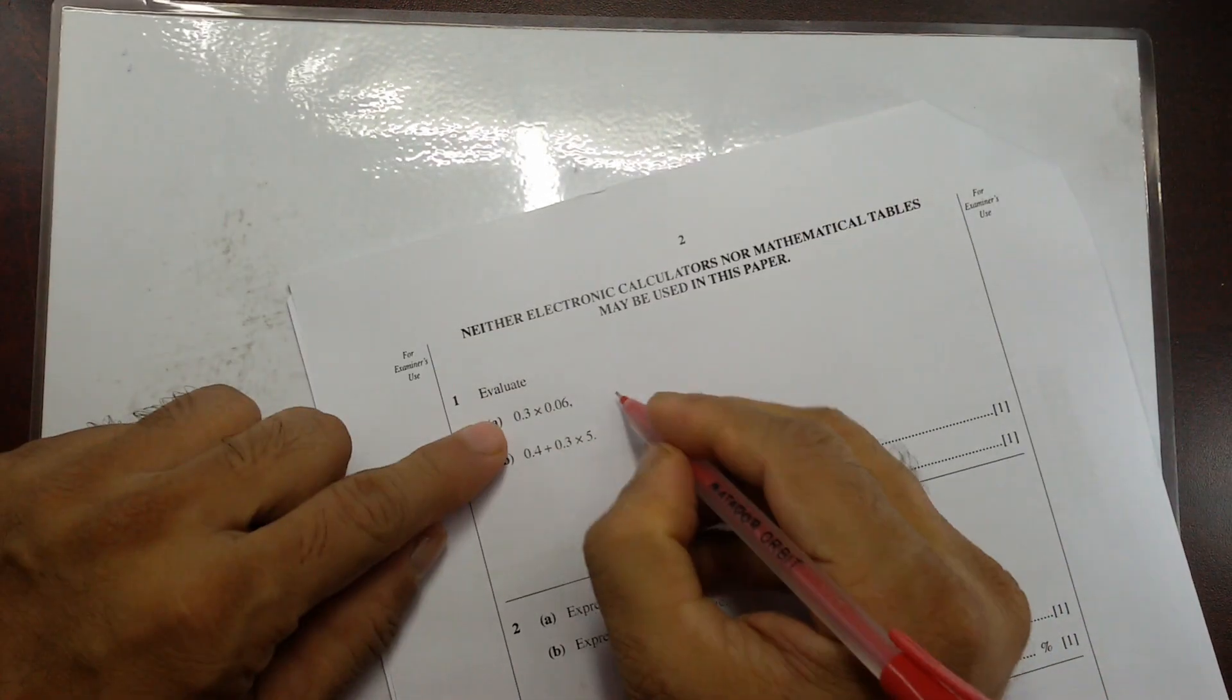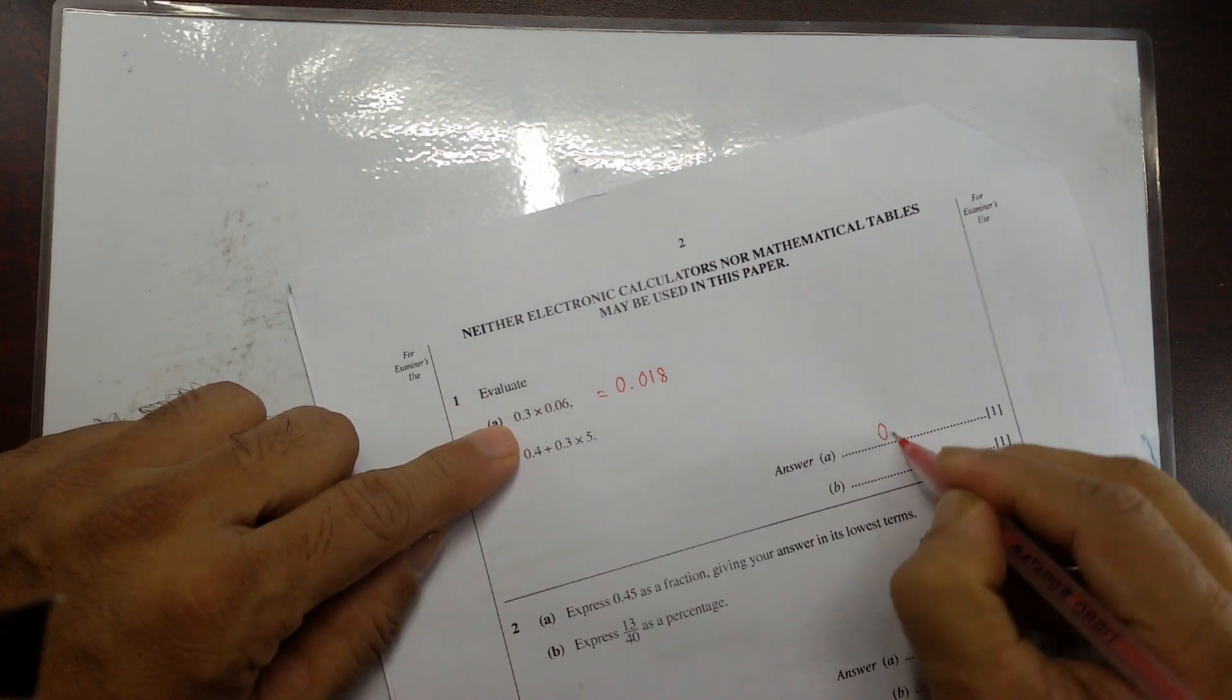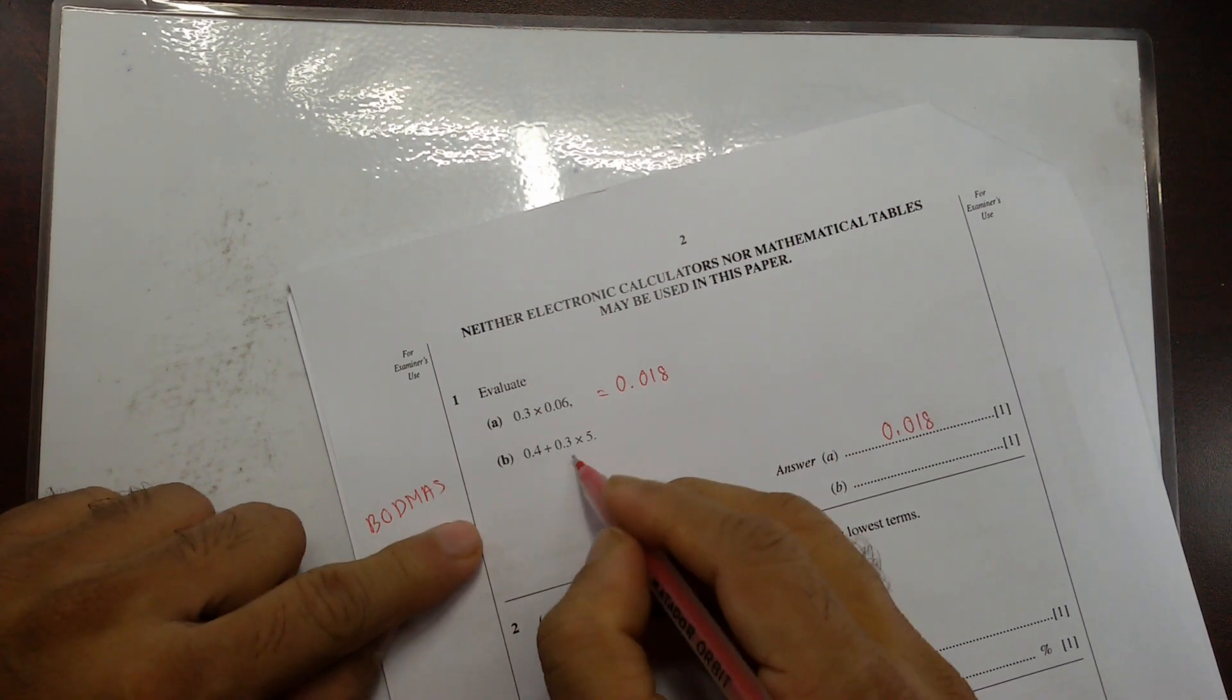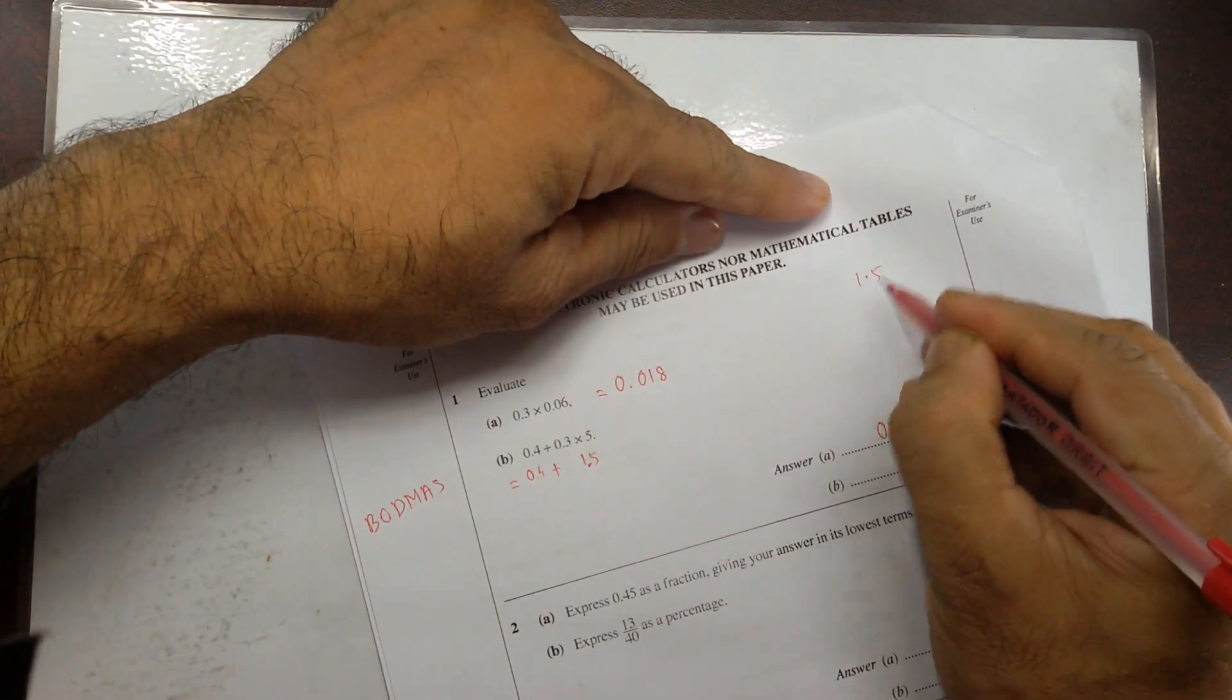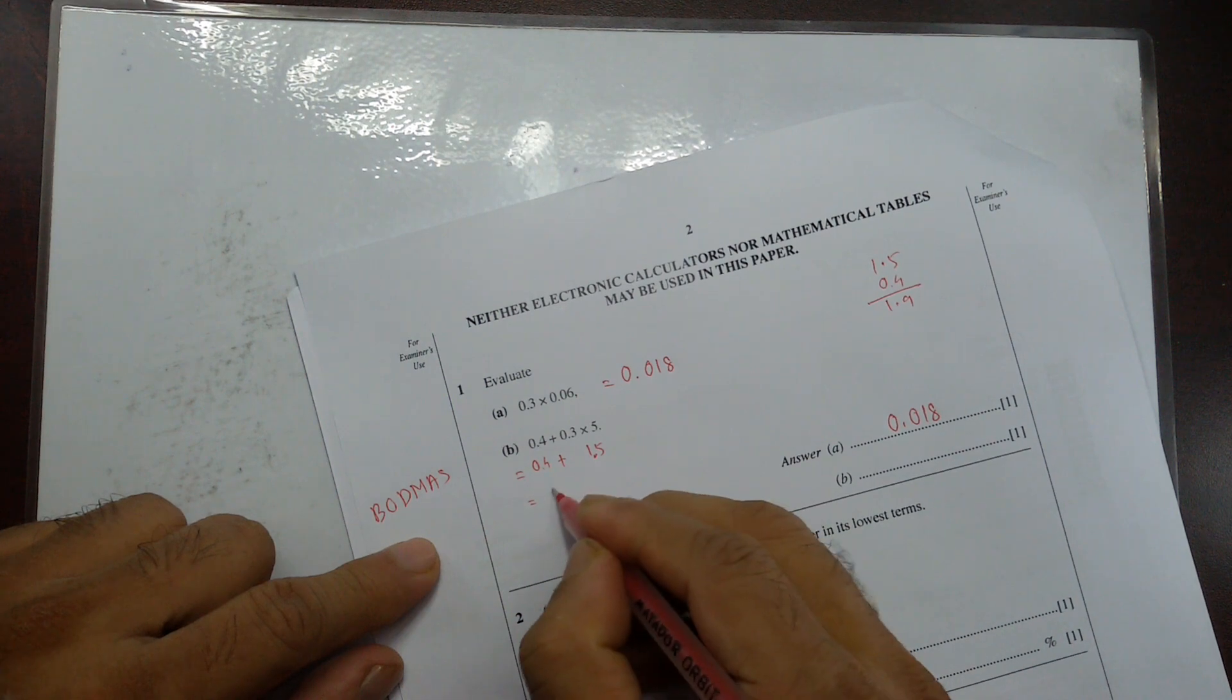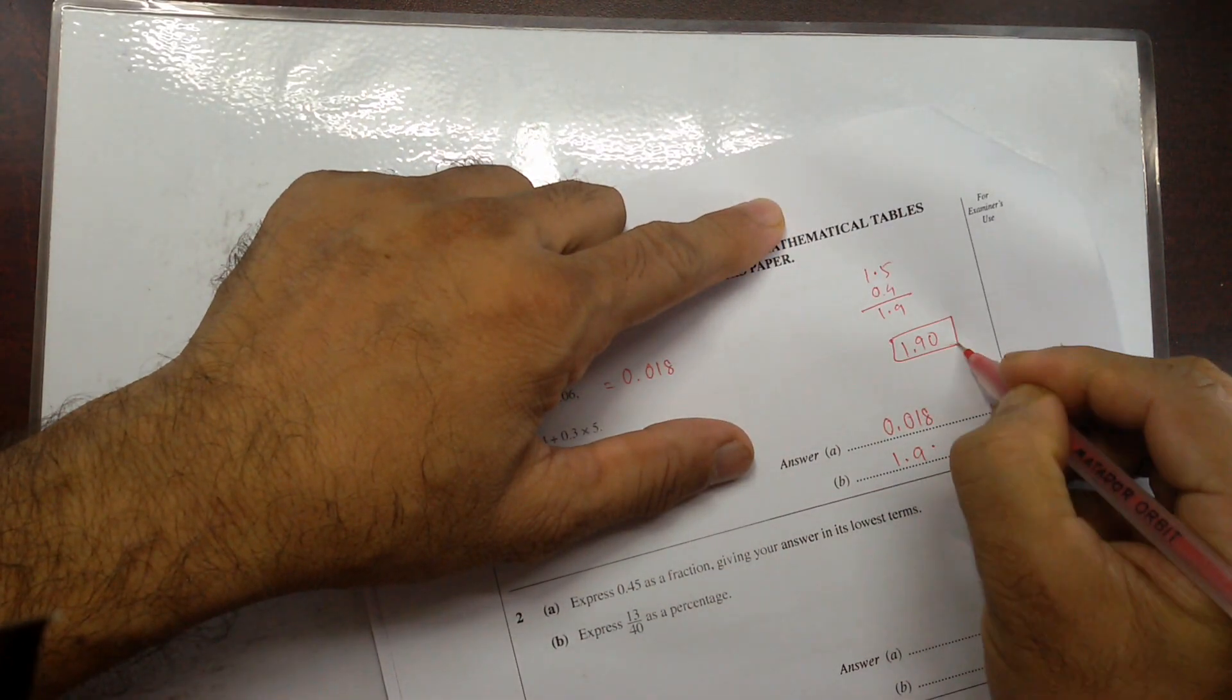Let's do question number 1. That's evaluation: 3, 6, 18. And after the point, I have 1, 2, 3 digits. So 1, 2, 3. That's 0.018. Then this is BODMAS. BODMAS rule. You have to do multiplication before the addition. So it's 15. Then after 0, 1 digit, so write over here 0.4. If you add that, 1.5, 0.4, that's 1.9. So it's 1.9, or 1.90 to 3 significant figures.